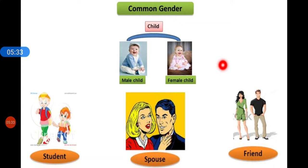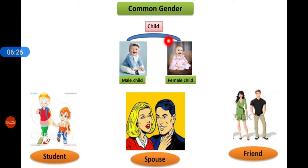The third category is common gender nouns. Common gender means if you say that name, you cannot judge if it is masculine or feminine — these are nouns used for both masculine and feminine. For example, 'child': a child can be a male or a female; just by the word 'child' we cannot judge.